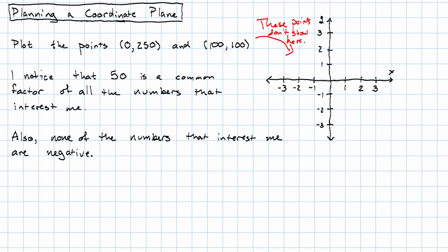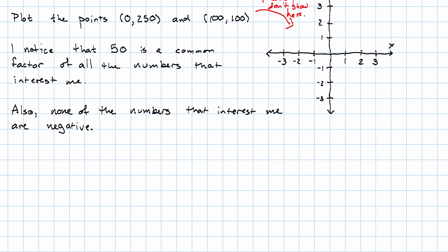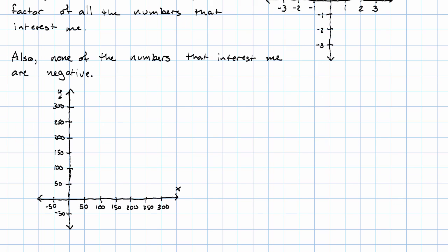With that in mind, I might set up a pair of axes that look like this. Notice I'm counting by 50s on both axes. Also, notice that both of my axes extend a little bit beyond the numbers that I need in both directions.